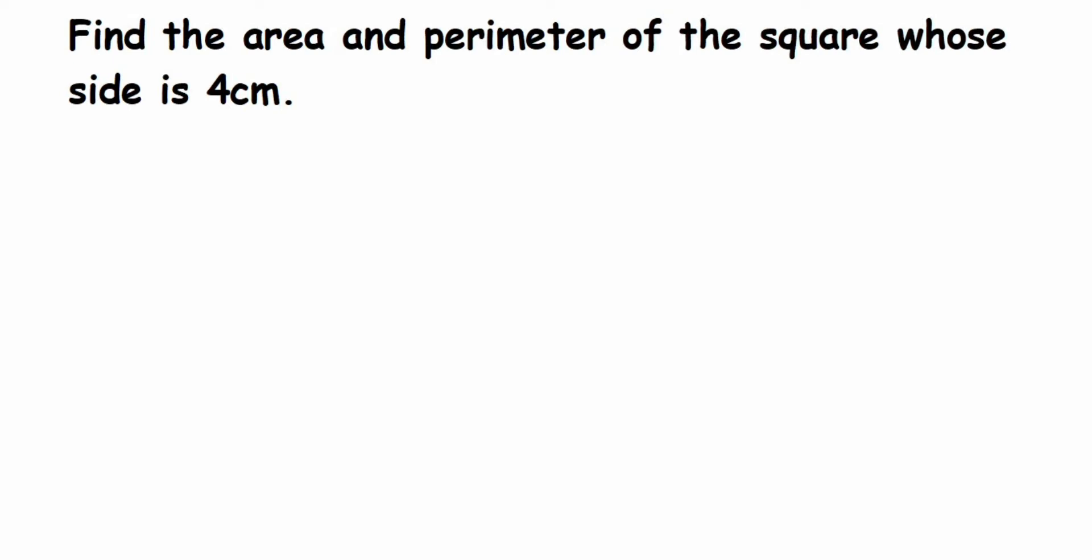Hey everyone, so here's a question from perimeter and area. The question is: find the area and perimeter of the square whose side is 4 centimeters. It's a really simple question, let's start solving.